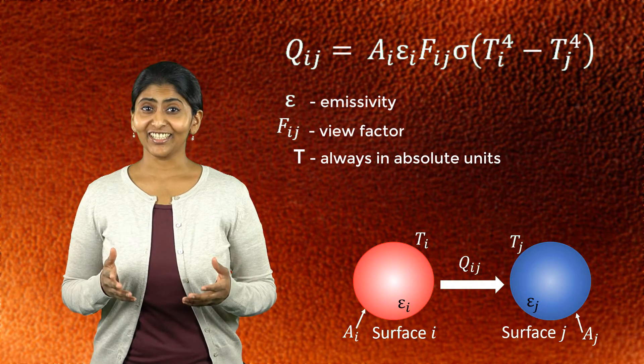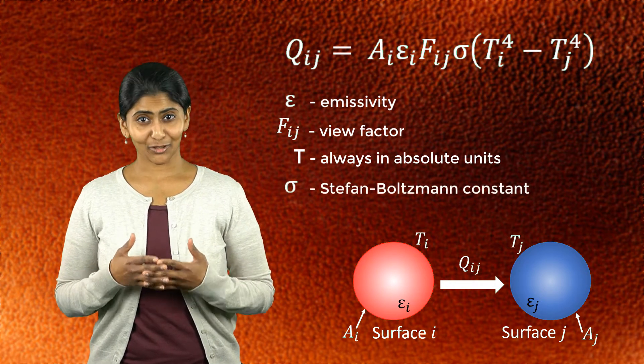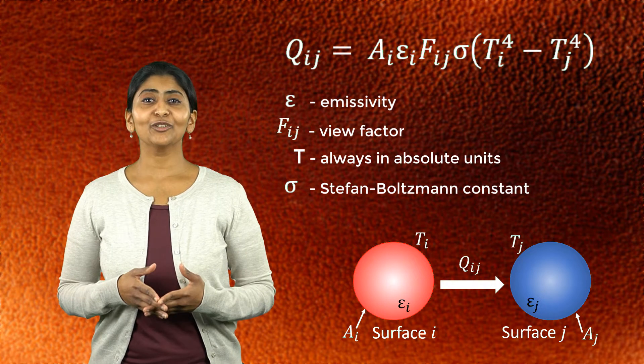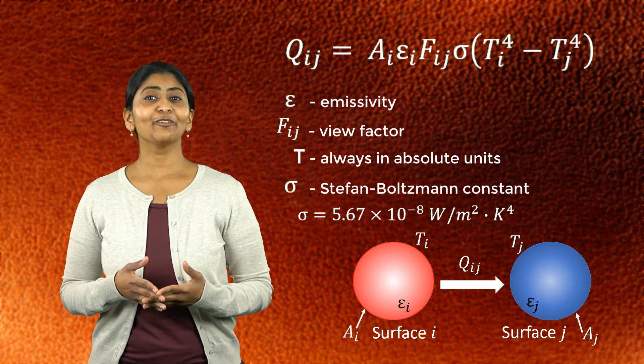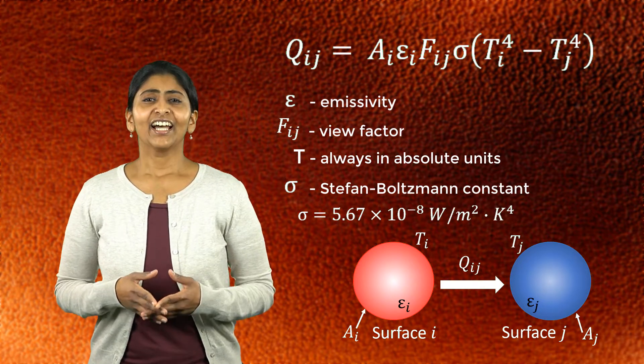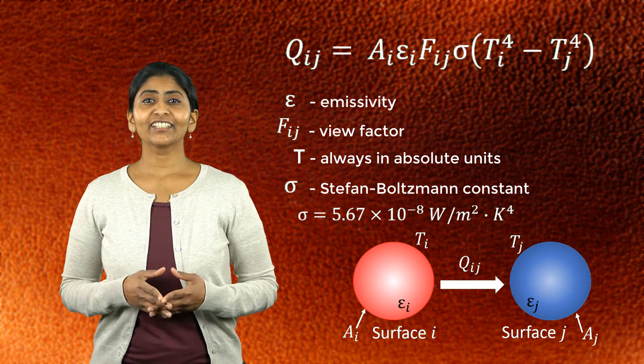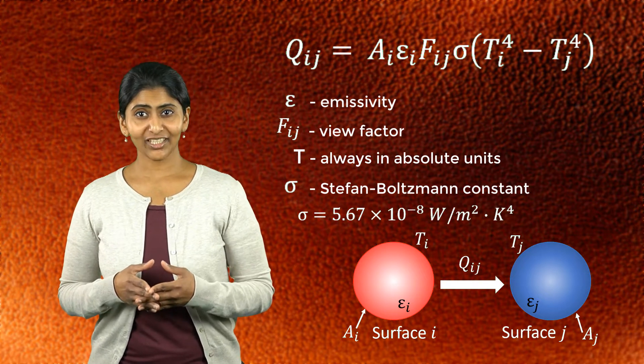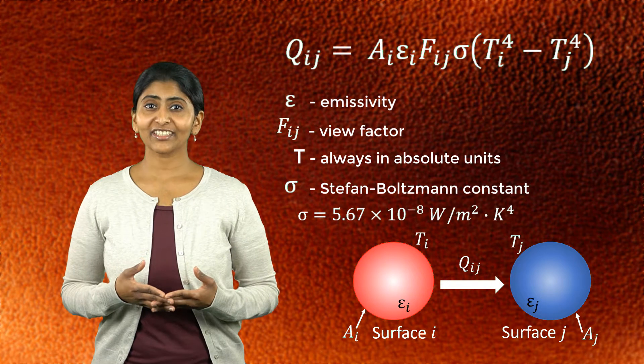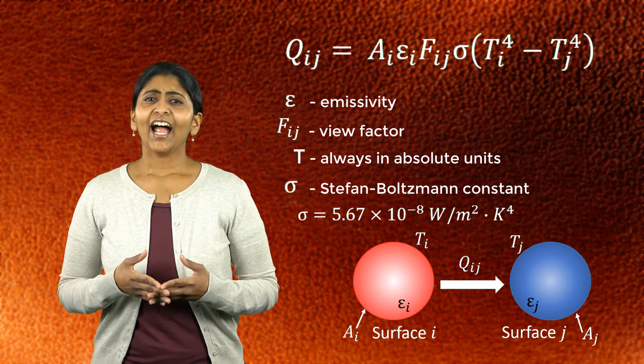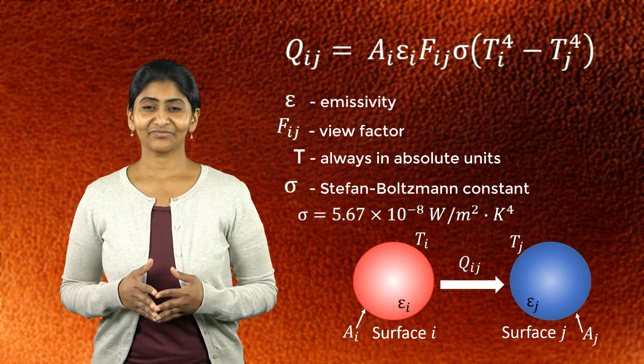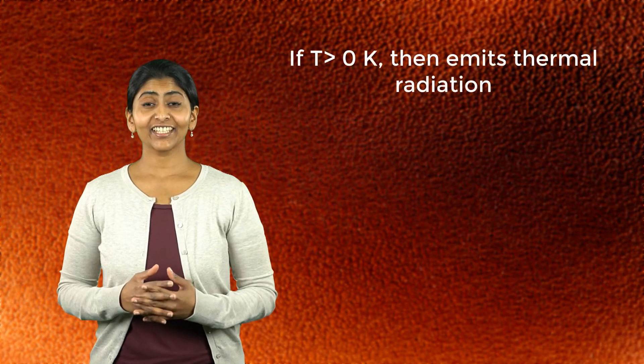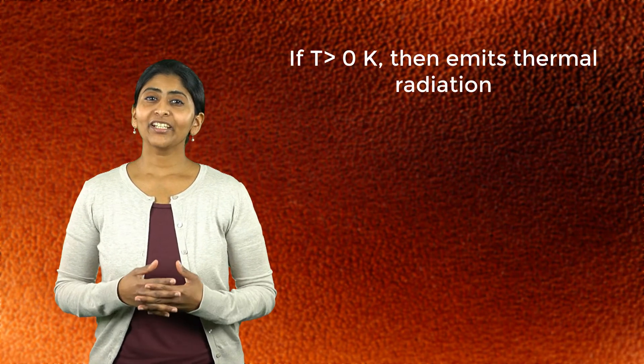Last but not least, sigma is the Stefan-Boltzmann constant having a value of 5.67×10^-8 watt per meter square Kelvin to the power 4. This is a physical constant formulated in the late 19th century by two physicists from which the constant takes its name, and it can be thought of as converting the absolute temperature to heat intensity.